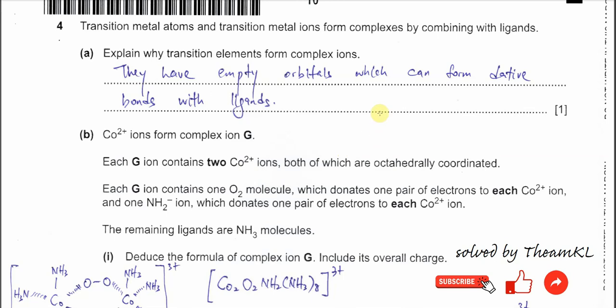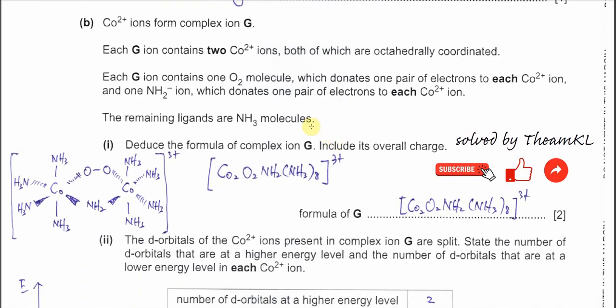Question 4 is about transition metals and complex ions. Part A: explain why transition elements form complex ions. They must have empty d orbitals. With these empty orbitals, they can gain or accommodate the lone pair from the ligand. So first, empty orbitals must be present, then the metal can accommodate the lone pair from the ligands and form a complex.